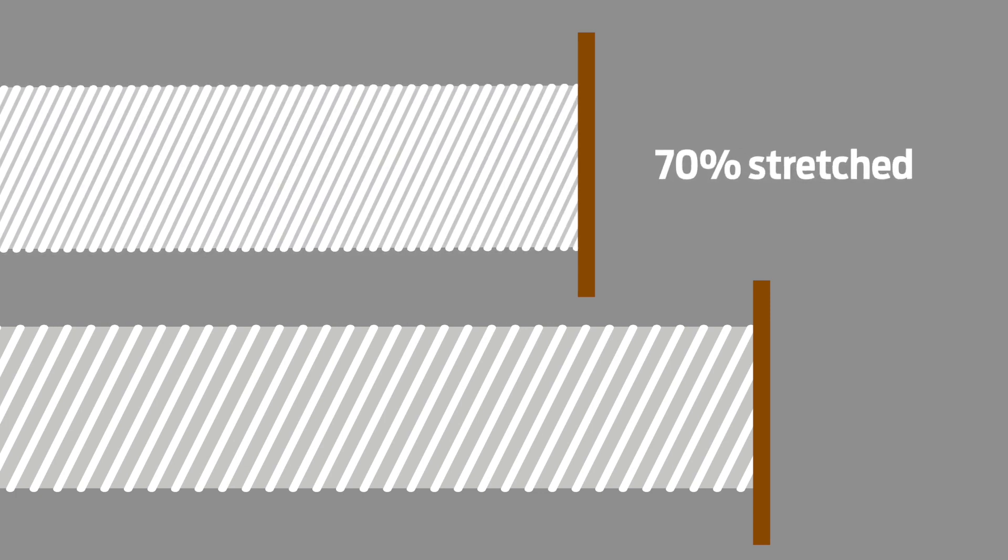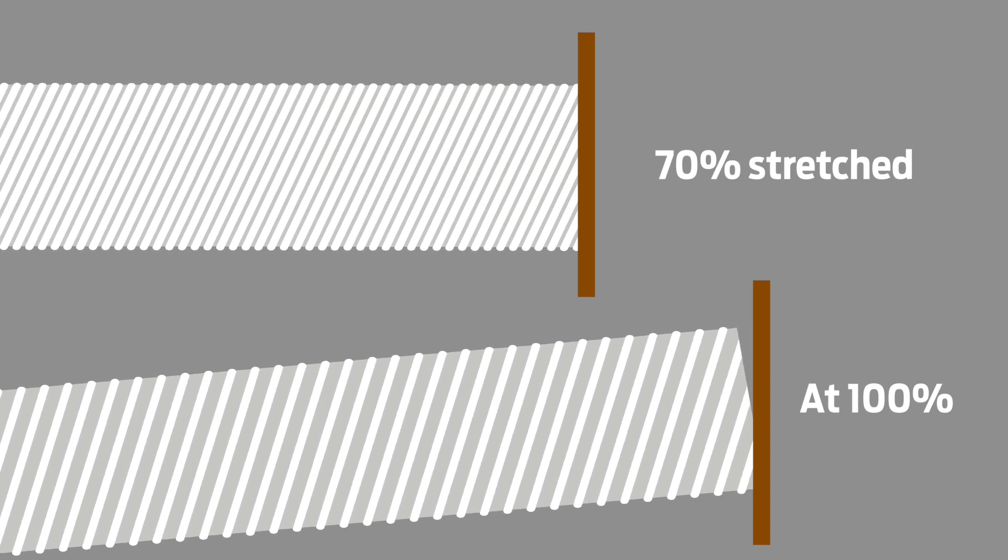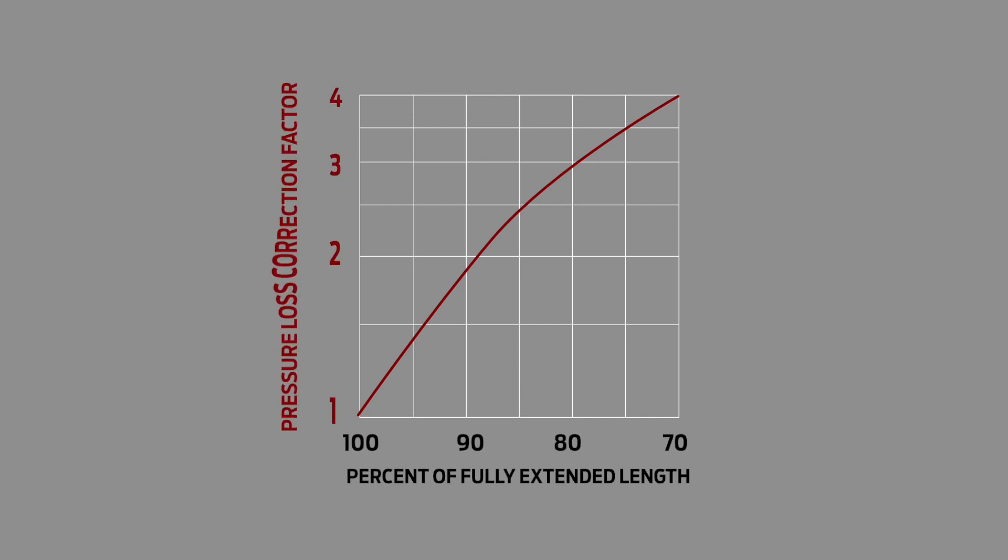In practice, flexible ducting is not still completely stretched. Understandable given that under tension it will tend to pop off grills and motors over time. This graph gives an indication of how changes in how stretched a duct is impacts on its pressure drop. Assuming best case of the ducting only being extended to 90% of its maximum length, you can see from the plot here that the pressure drop needs to be multiplied by a factor of 2. This gets worse the less stretched it is, i.e. a 70% length is a factor of 4.